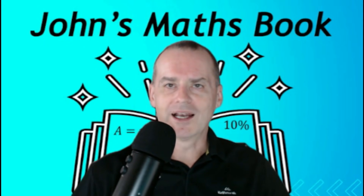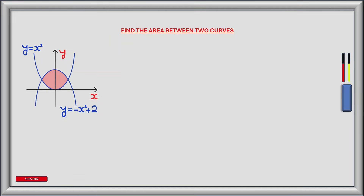Without further ado let's go over to the whiteboard. Let's look at how we find the area between two curves given only the equation of each curve. The diagram on the board shows two curves and the red shaded region is the area we want to calculate. The equation of each curve is shown: y equals minus x squared plus 2, and y equals x squared.